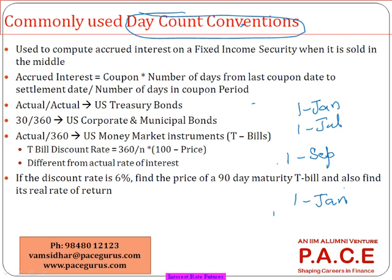That is where we try to find out the interest which has accumulated between the last coupon payment date and the settlement date. I am trying to find out the coupon worth between the last coupon date and the date on which I am selling the bond, because that much of the coupon should come to me. This is what we call accrued interest — the interest which accrued but has not yet been paid. It will be paid only on first January, but I am disposing of the bond before that date.